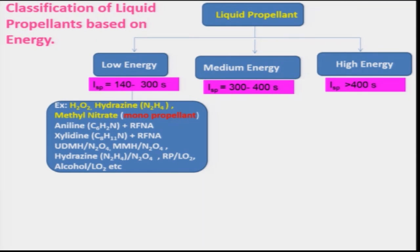Looking at some examples of low energy liquid propellant: hydrogen peroxide and methyl nitrate are basically monopropellants which can produce a low energy ISP in the range of 140 to 300 seconds. Hydrogen peroxide is hypergolic in nature, whereas methyl nitrate is a non-hypergolic propellant.